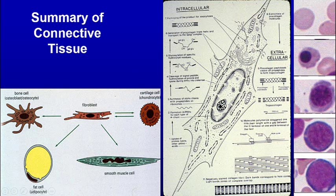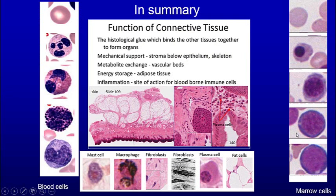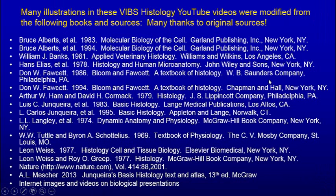In summary, fibroblasts can make a host of different cells, including all the cells needed for blood vessels. Also, collagen is assembled extracellularly — there's an intracellular and extracellular component. You cut off the procollagen to make tropocollagen, and the tropocollagen is assembled on the outside. Bone cells are really connective tissue. So in connective tissue: it's a histologic glue that binds things together, provides mechanical support, metabolic exchange, energy storage, and is the site of inflammation.